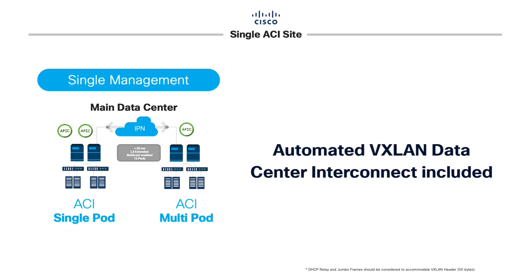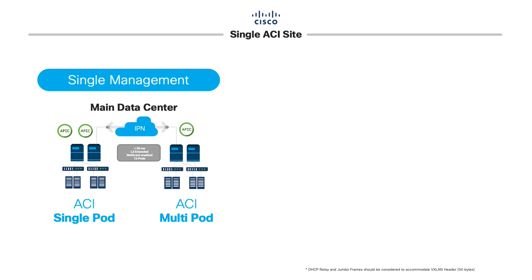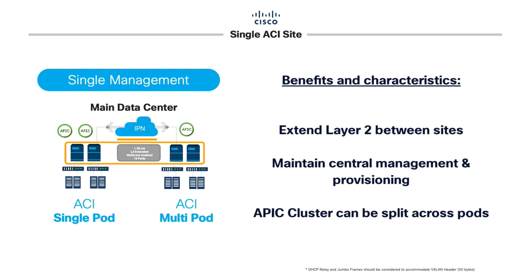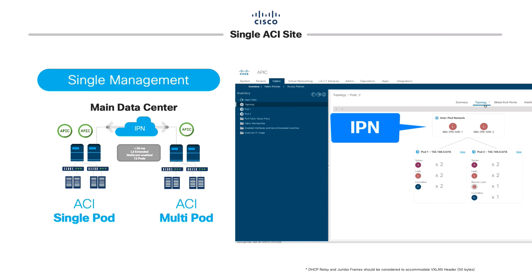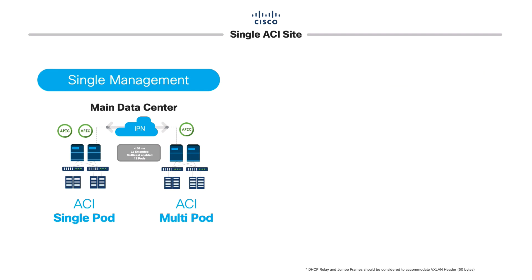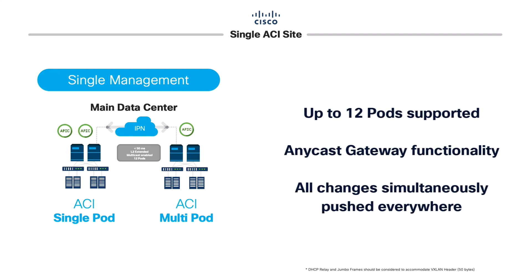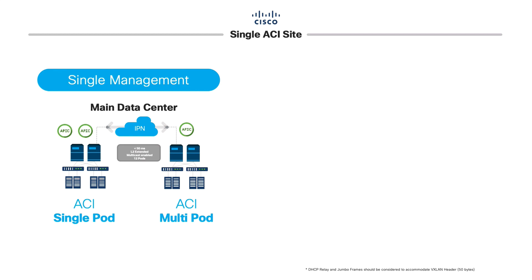We can integrate multiple pods or even data centers separated by a Layer 3 domain in the middle. As long as there is an intermediate routed network between two buildings or locations — each having ACI spines and leaves — ACI can automate the data center interconnect between them using VXLAN, connecting the inter-pod network to the spine layer. This translates to savings by potentially avoiding expensive dark fiber or MPLS connections, extending Layer 2 automatically and enabling VM mobility anywhere, which is well suited for active-active data center deployments. ACI can aggregate up to 12 pods through a single APIC cluster.